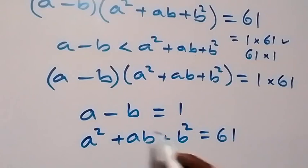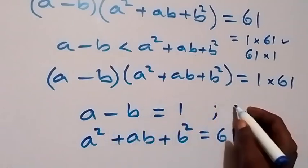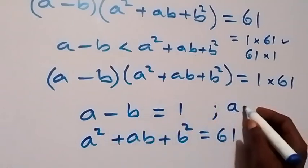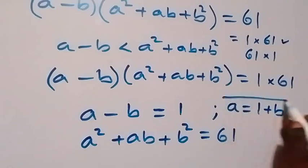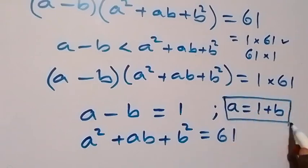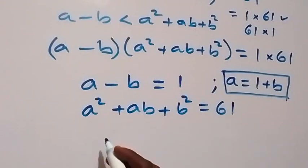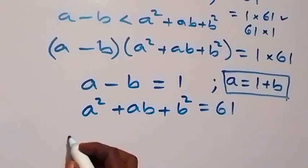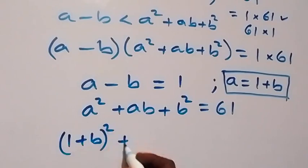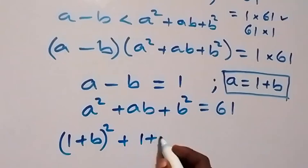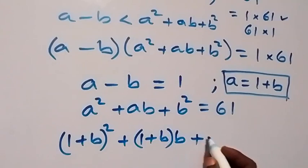From the first equation, we take a minus b equals 1, so a equals 1 plus b. Using this relation, we substitute into the second equation, giving us: 1 plus b, all squared, plus 1 plus b times b, plus b squared equals 61.